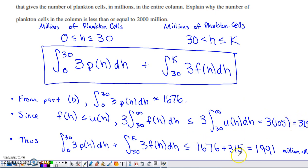if I add that 315 onto the 1676 that I had for the first term within that expression, that gets me to 1991 million cells of plankton.